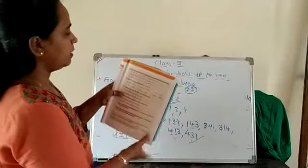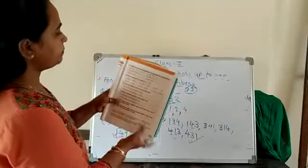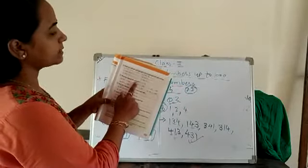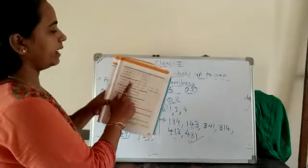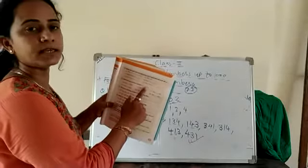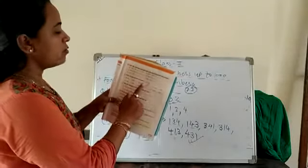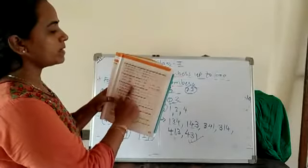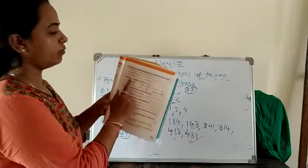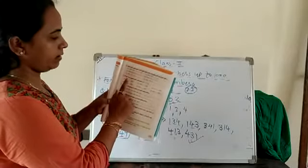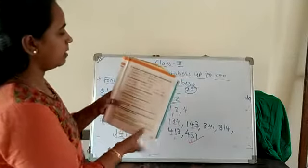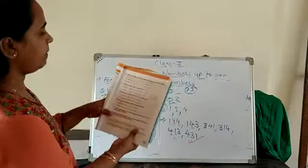Then question 4: here the expanded form is already given — you can write the number. Look here: 400 plus 20 plus 6 — so our number is 426. Then write the appropriate symbol: greater than, less than, or equal to — us mein se jo bhi symbol use hota hai, wo use karke fill in the blanks.